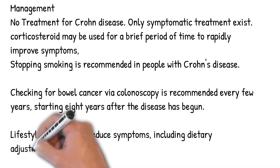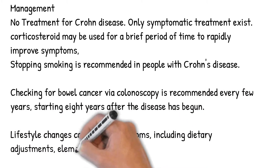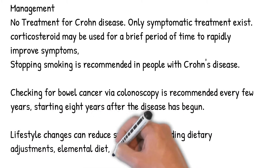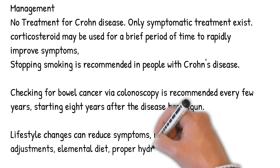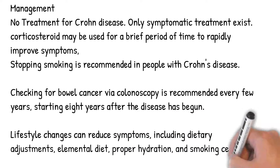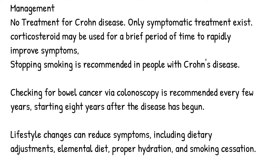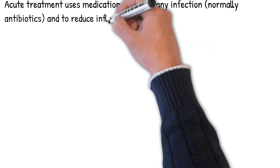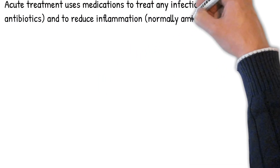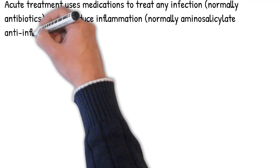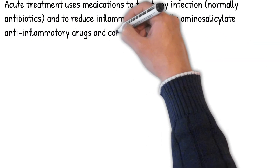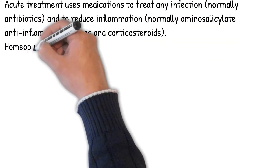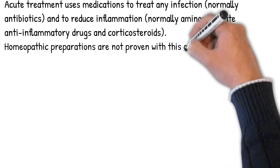Acute treatment uses medications to treat any infection, normally antibiotics, and to reduce inflammation, normally aminosalicylate anti-inflammatory drugs and corticosteroids. Homeopathic preparations are not proven for this or any other condition, with large-scale studies finding them to be no more effective than a placebo.